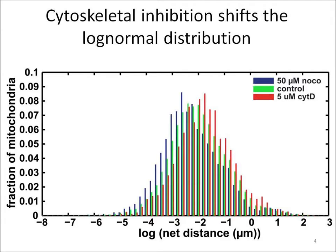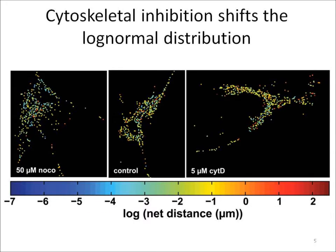Microfilament depolymerization, on the other hand, shifted the distribution to the right, indicating larger net distances traveled. Overall, these results support the idea that mitochondrial motility is characterized by a continuous log-normal distribution throughout the cell, rather than by discrete categories of diffusive or motor-driven motion. This log-normal distribution, in turn, is affected by interfering with the cytoskeletal integrity of the cell.